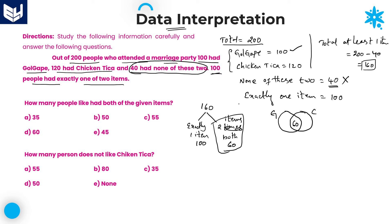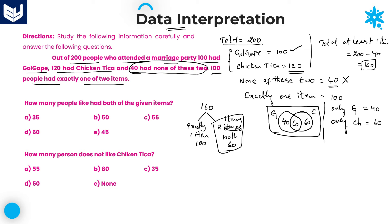Once you get this value, the remaining values are easy. Entire Golgap is 100; out of this 100, 60 is already at the intersection, so remaining only Golgap is 40. Entire Chicken Tikka is 120; out of this 120, 60 is at the intersection, so remaining only Chicken Tikka is 60. The final Venn diagram values: only Golgap = 40, only Chicken Tikka = 60, both = 60, neither = 40.